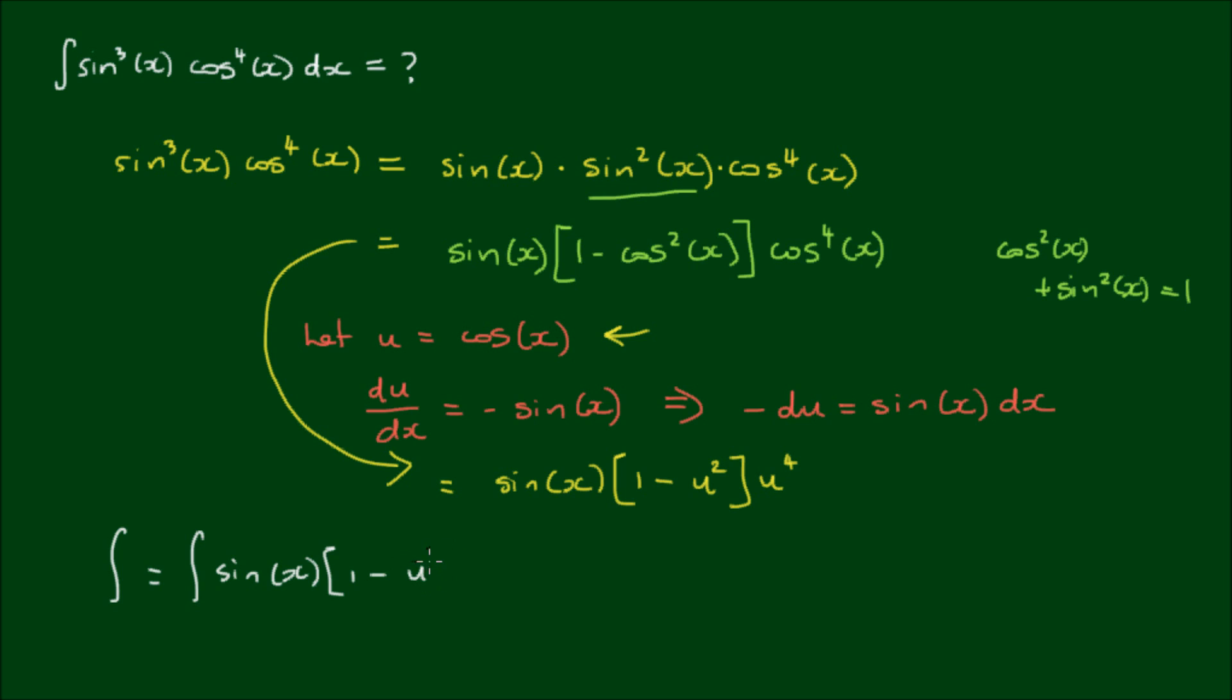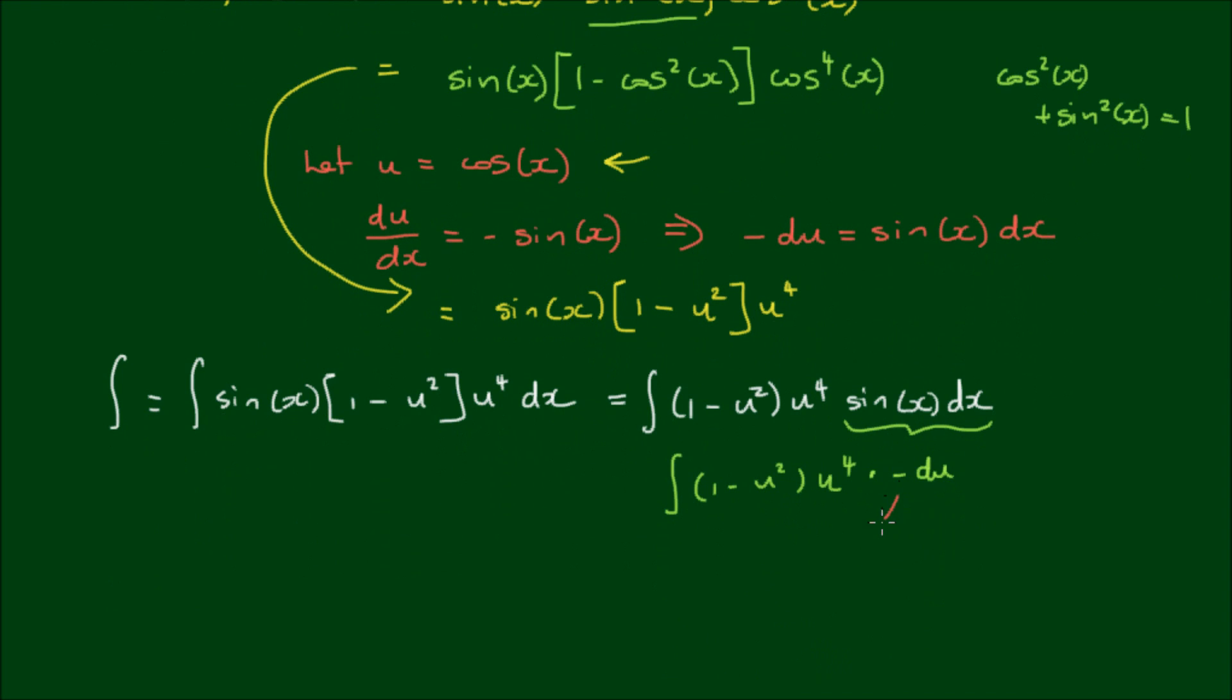And if I then group the sin(x) and the dx together, I get [1-u²]u⁴ times negative du. And I can expand the negative into these parentheses, and also this u⁴ into the parentheses. So my integral becomes the integral of u⁶ minus u⁴ du.